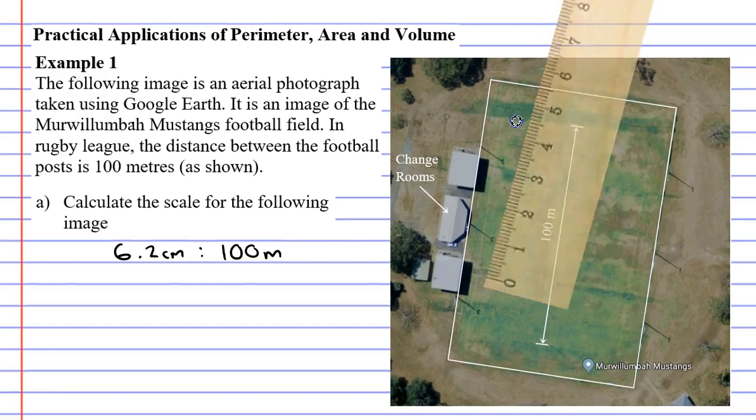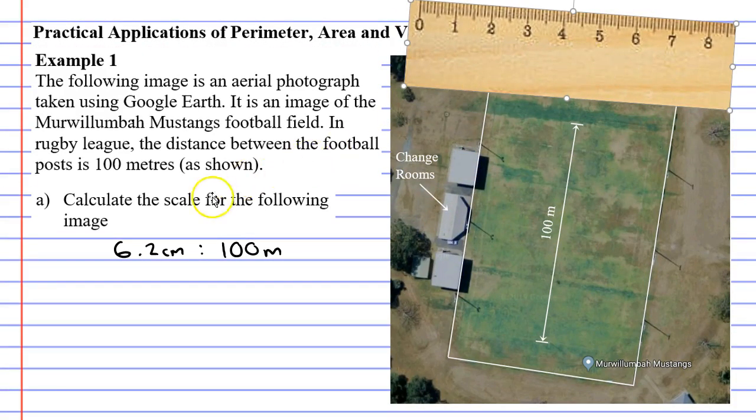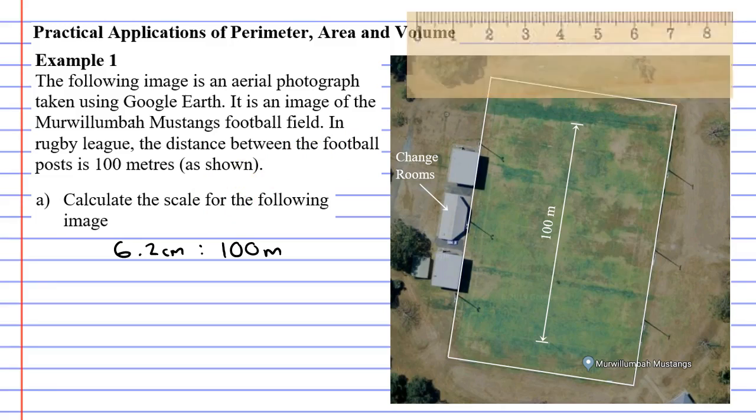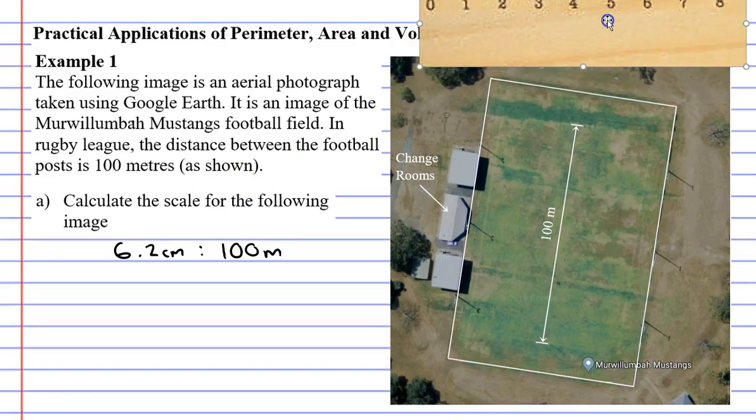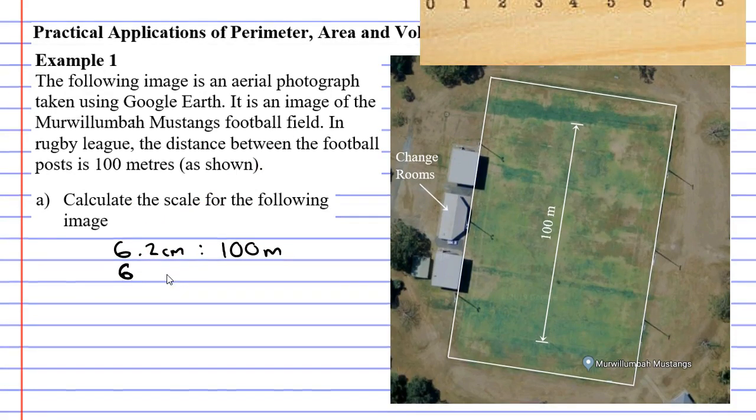What we want to do when we get this ratio is get rid of the units and have the number 1 on the left-hand side. It makes everything else a lot easier when we get to that point. First of all, I'll make them the same units. So 100 metres is the same as 10,000 centimetres, and once they're in the same units, you can get rid of the units.